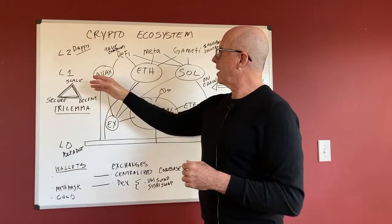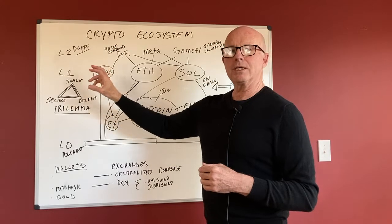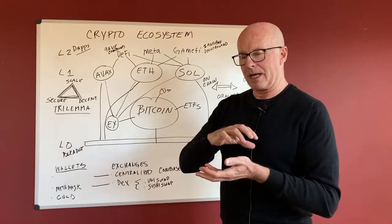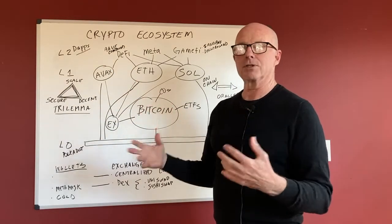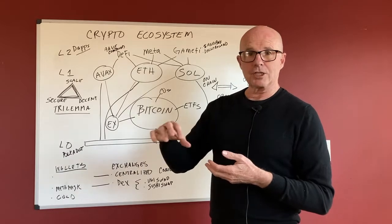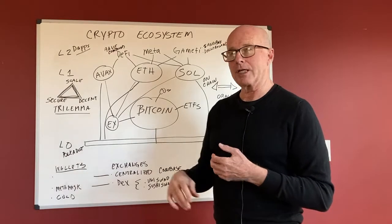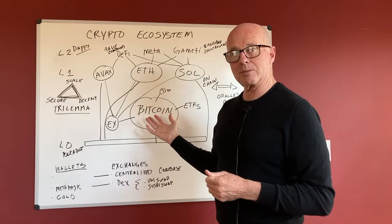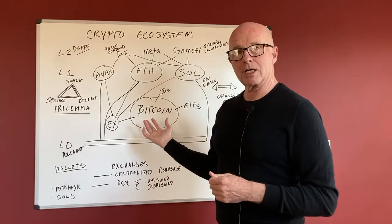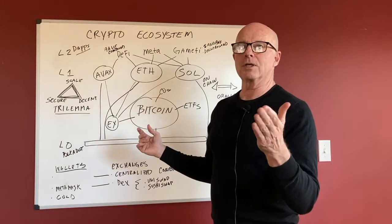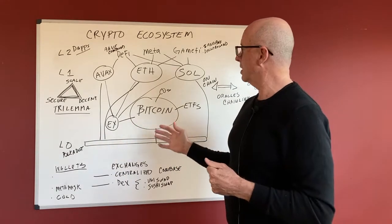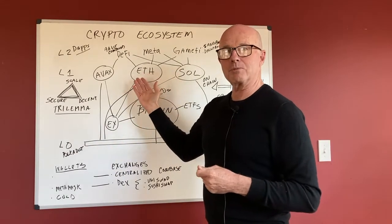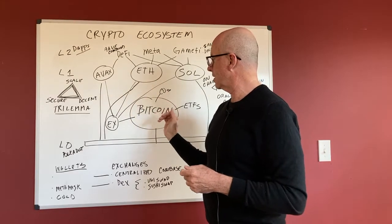Now we're going to talk about layer one. Layer one is what they talk about as the architecture of this whole ecosystem, the blockchains, the fundamental blockchains of these different cryptocurrencies. Bitcoin has its blockchain. It's a proof of work blockchain. Ethereum is the next biggest blockchain. These are layer one blockchains.